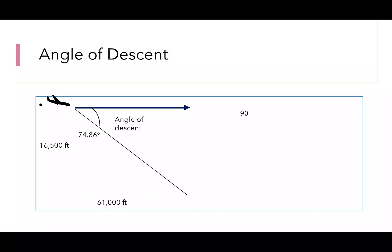Now to get our angle of descent, we're just going to subtract 74.86 from 90, which is 15.14. Because the question said to round our answer to the nearest degree, we say our angle of descent is 15 degrees.